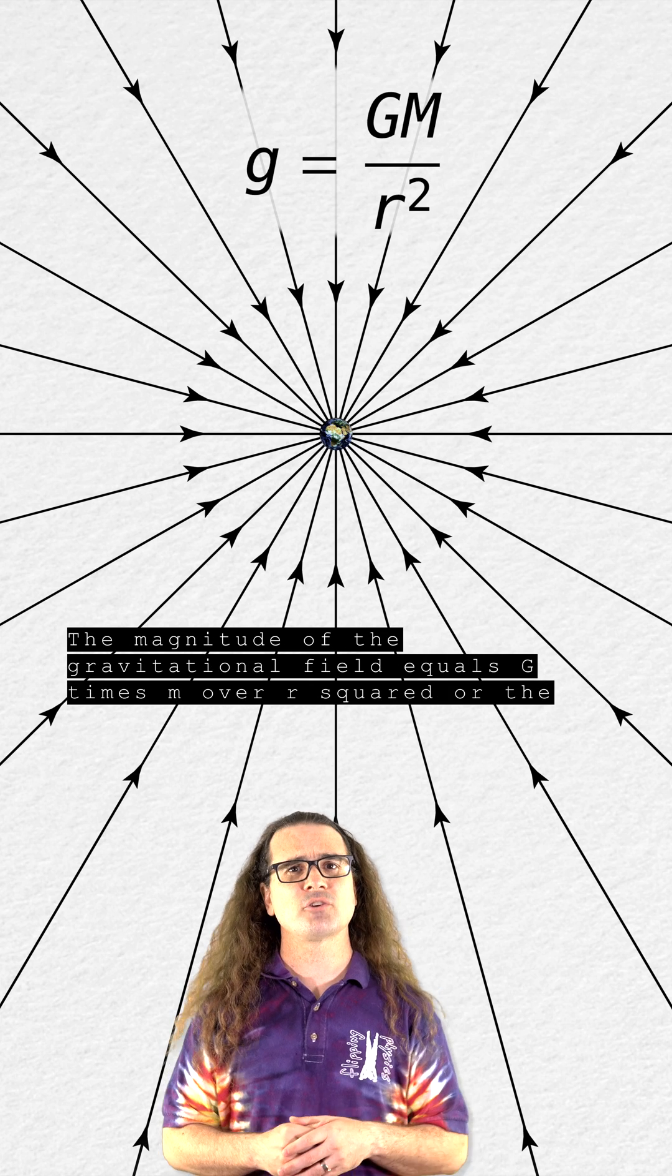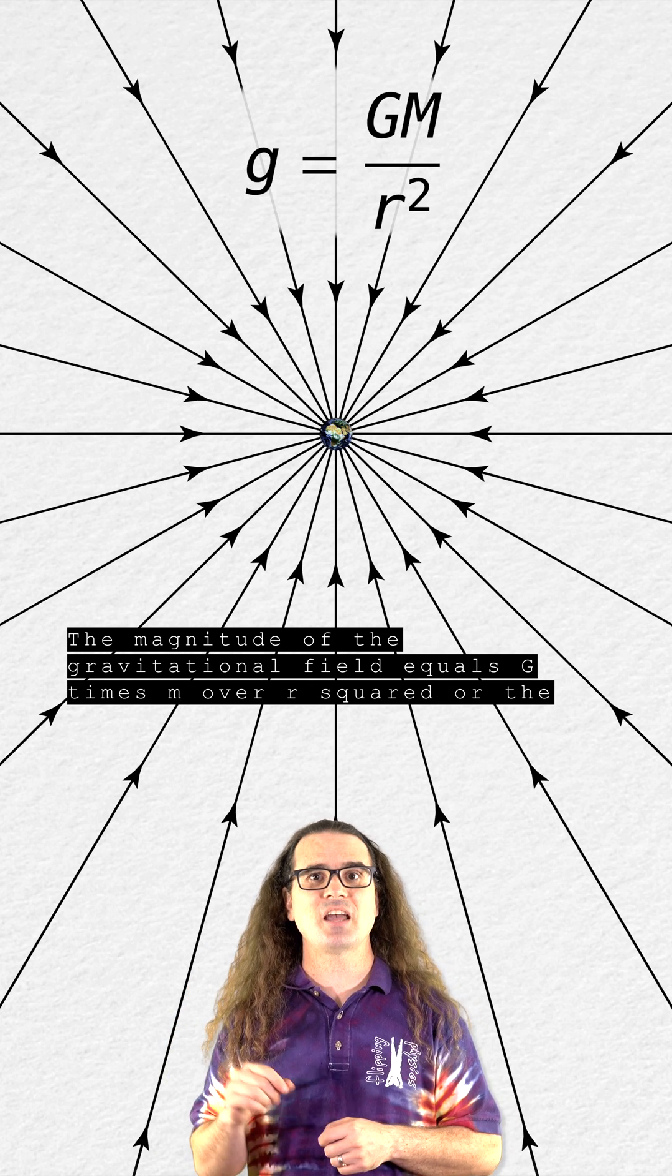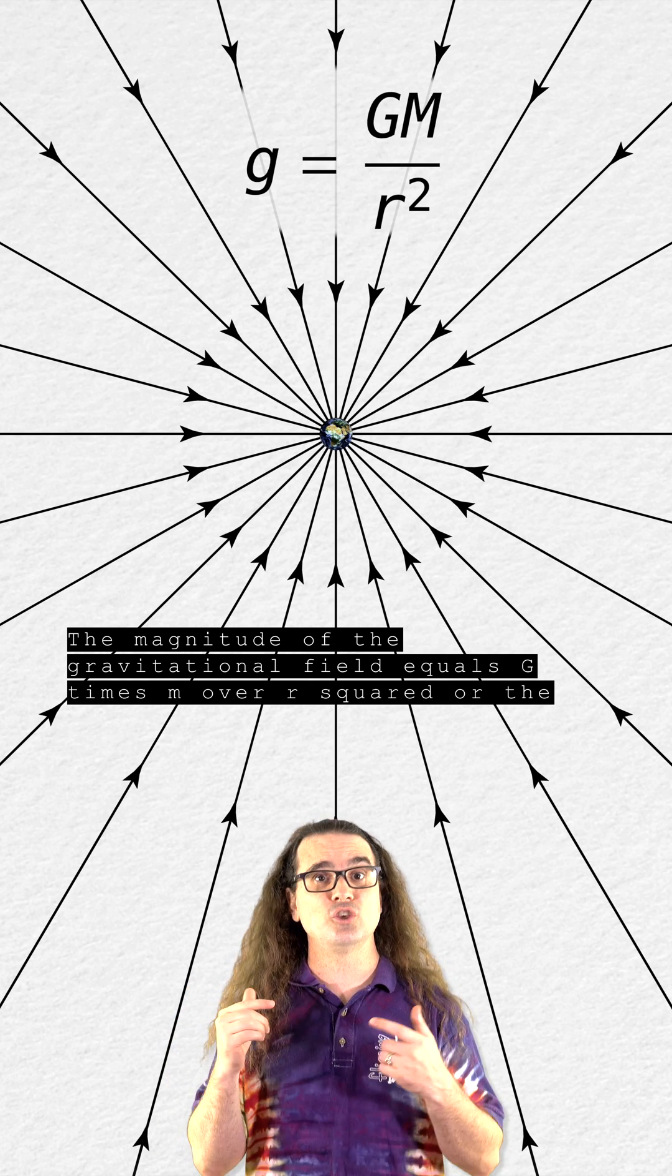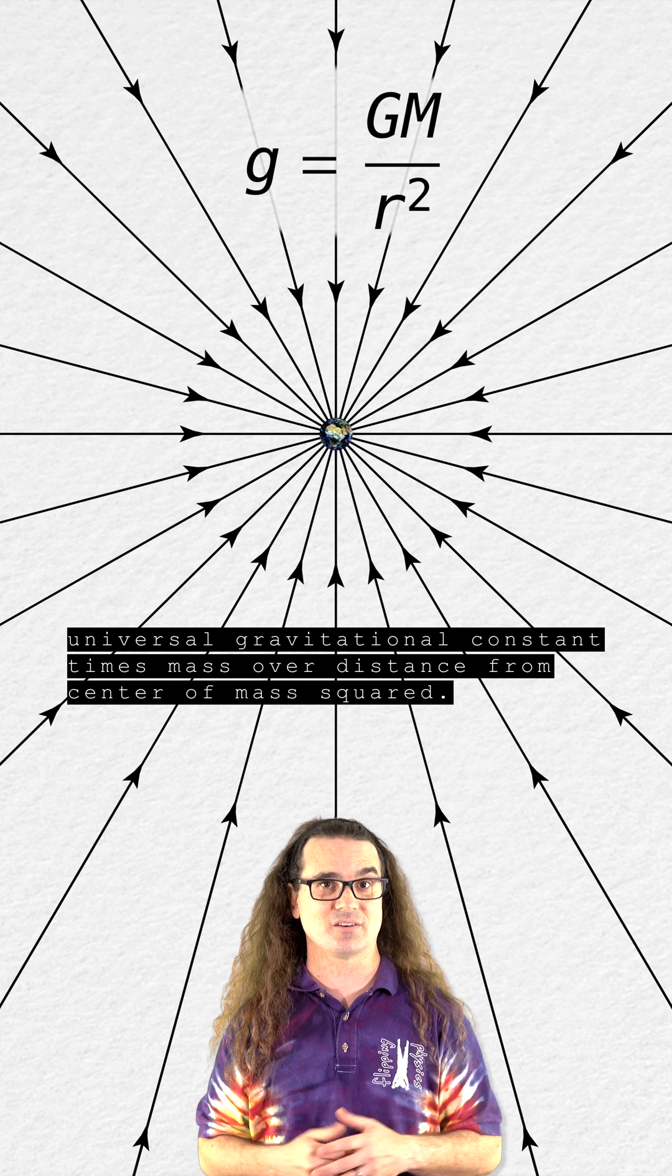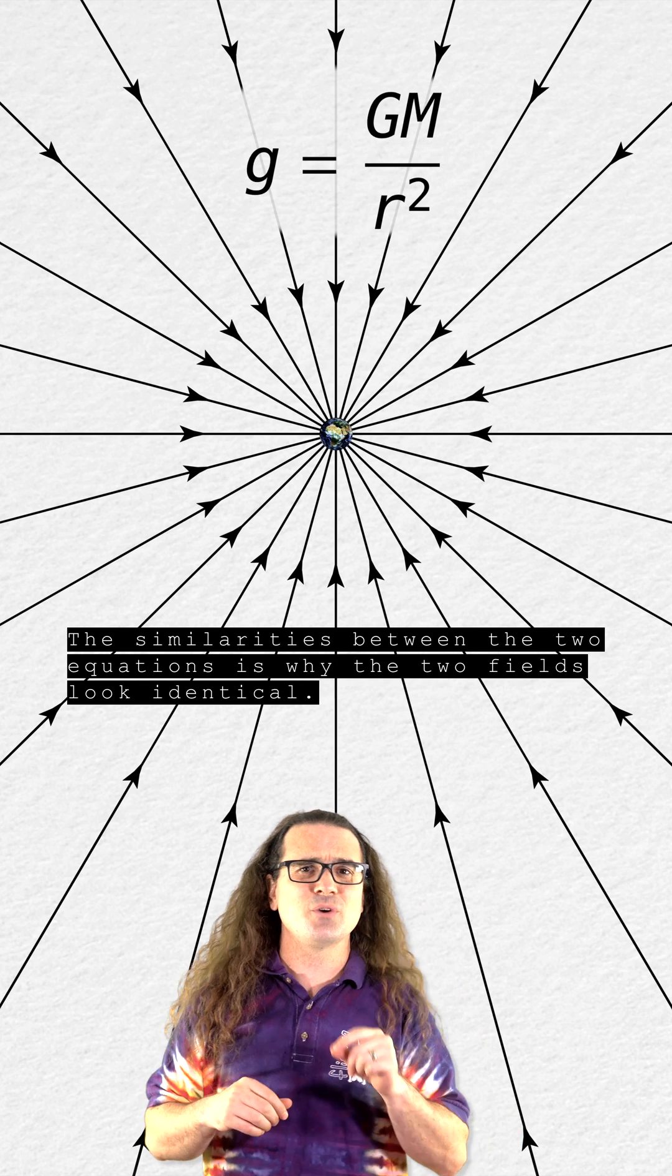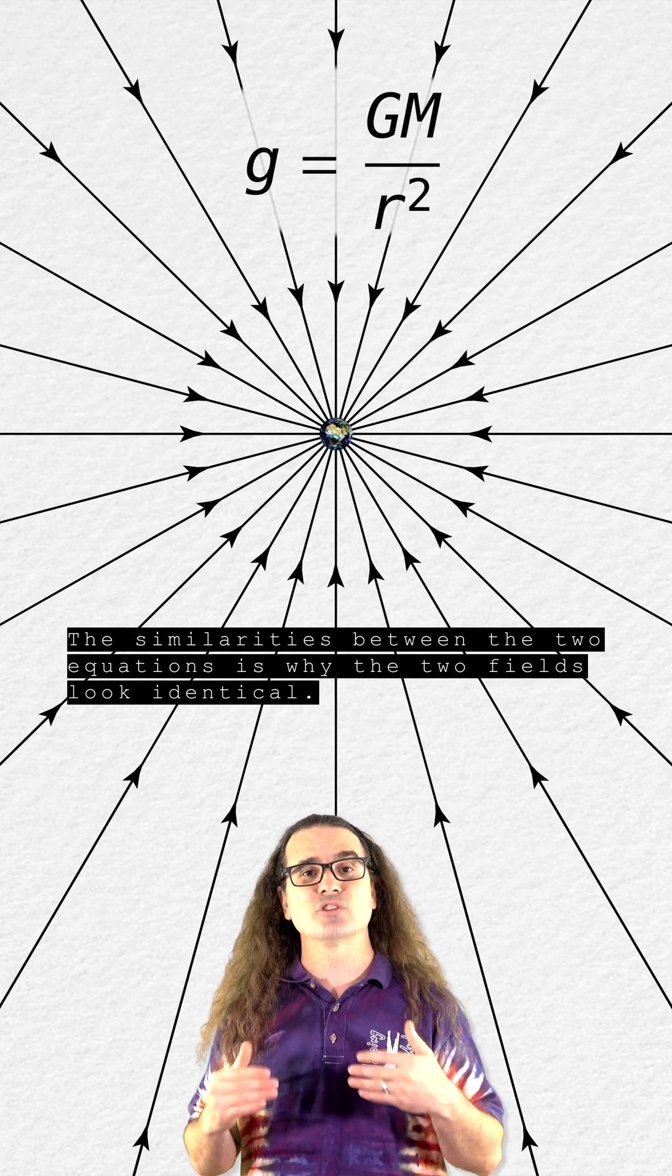The magnitude of the gravitational field equals big G times m over r squared, or the universal gravitational constant times mass over distance from center of mass squared. The similarities between the two equations is why the two fields look identical.